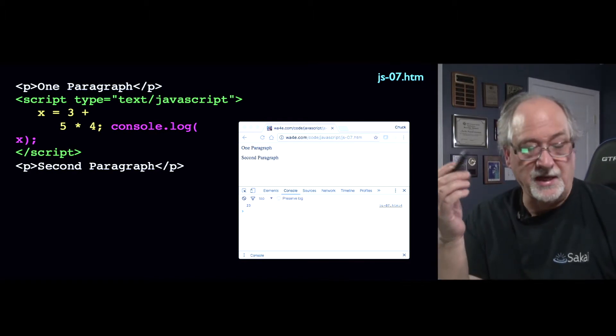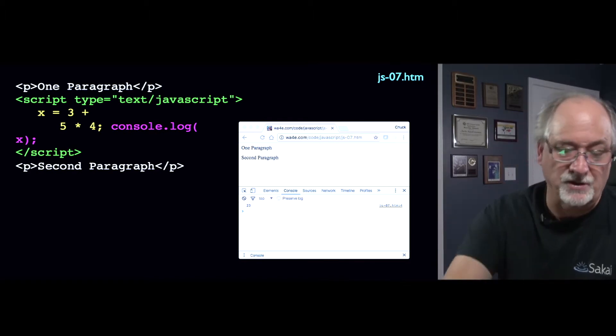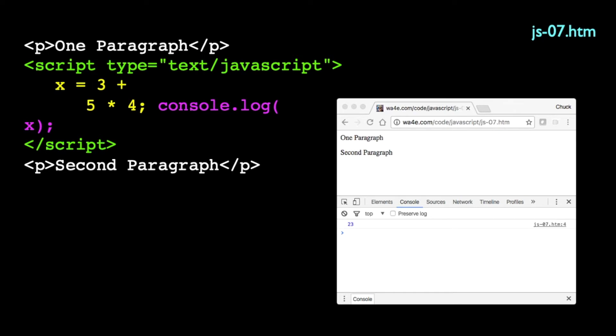So here's just an example of some really nasty JavaScript where, you know, x equals three plus five times four on two lines. And then this line's jammed up and console.log. That's okay. It just doesn't matter.